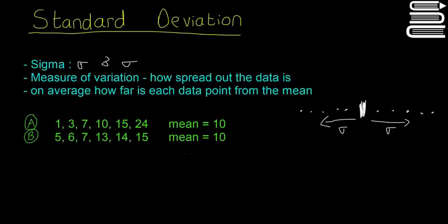So anyway, we have two little data sets here. We have A, which is 1, 3, 7, 10, 15, 24. So the mean of this data set is 10.